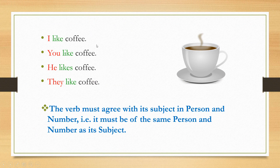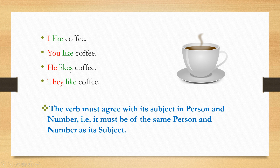You find that the verb 'like' has two different forms in the singular. 'I' is the singular subject and 'like' is the verb. 'You' is the singular subject and 'like' is the verb. 'He' is also a singular subject but 'likes' is the verb. We have added 's' here, and this kind of addition of 's' with the verb is called inflection. So the verb 'like' has two different forms: 'like' when the subject is in the first or second person, and 'likes' when the subject is in the third person — 'he'.